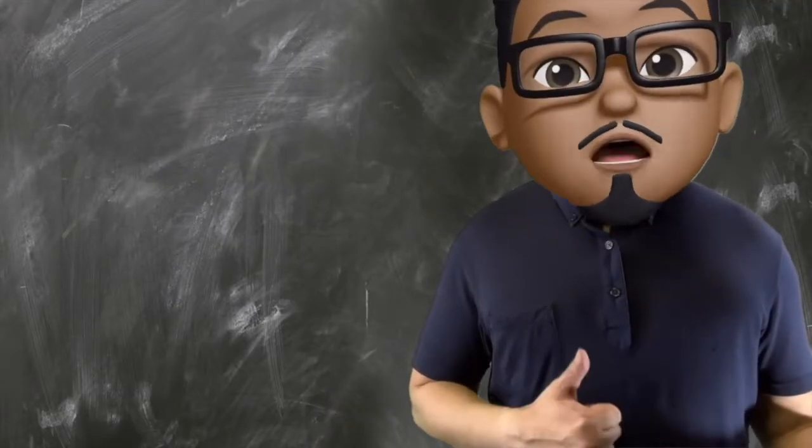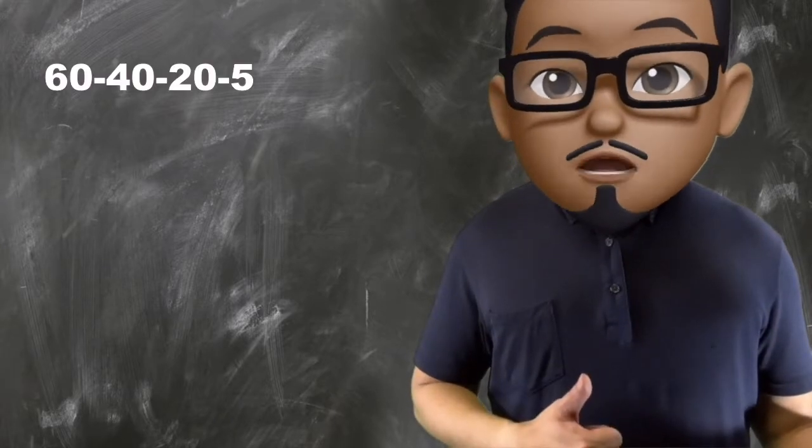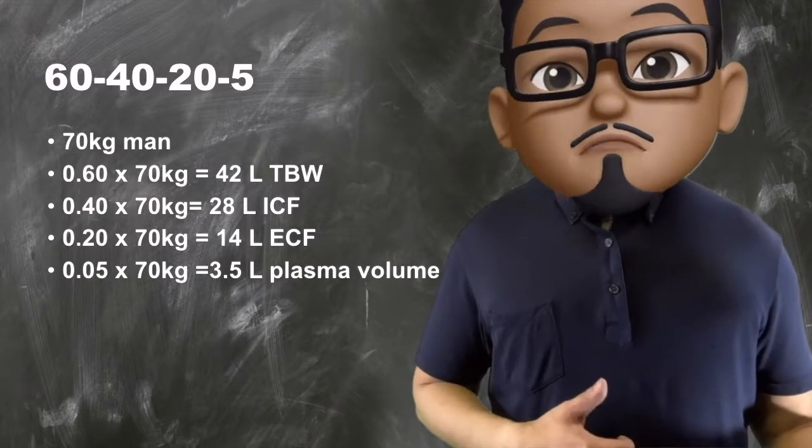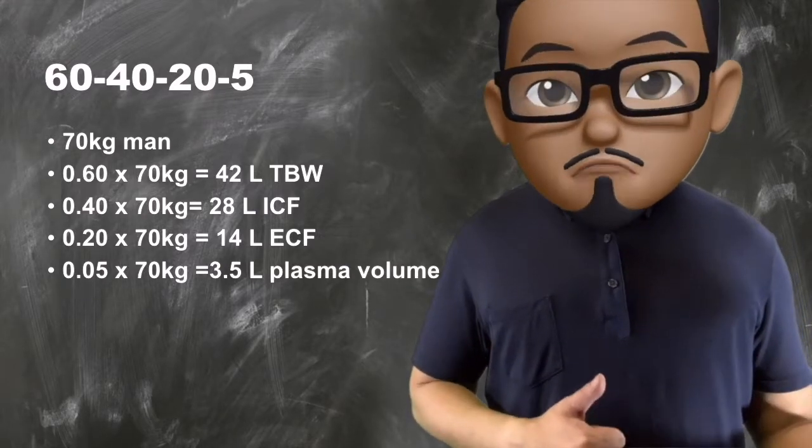Such that, for example, a 70-kilogram man has 60% or 0.6 times 70 will have 42 liters of total body water.